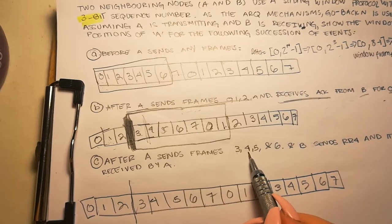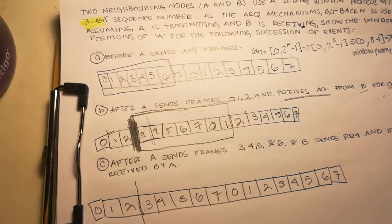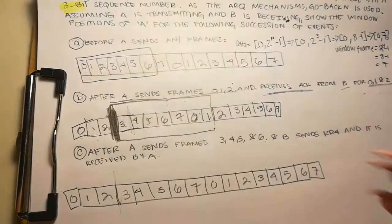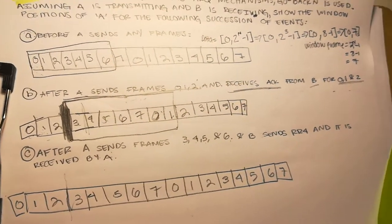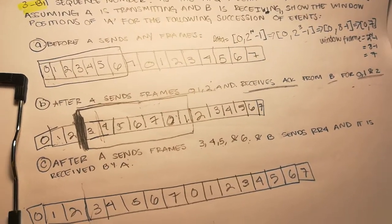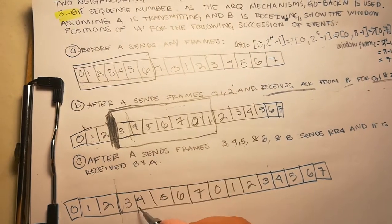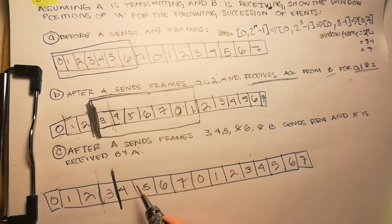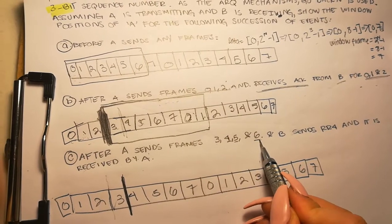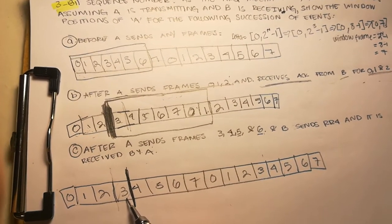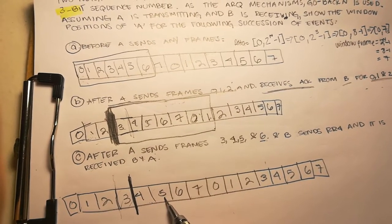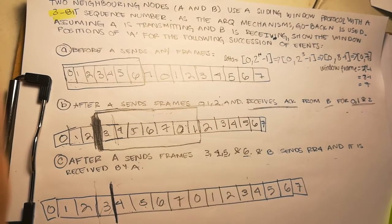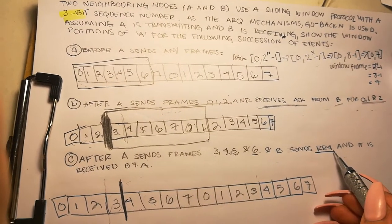Well, A sent four frames—three, four, five, and six. It is ready to receive four. What does that mean? I have sent up to this point and I have a mark here that says ready to receive four, but A has already sent four, five, and six. So I already got the acknowledgement for three but not for four, five, and six because B is still waiting for four. That's what RR4 means—ready to receive four.